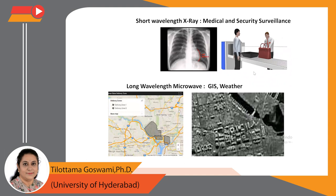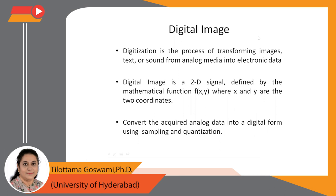The data acquired can be interpreted and analyzed in a computer for digital image data representation. Digitization is the process of transforming images, text, or sound from analog media into electronic data. A digital image is one that has been created through digitization. It is fundamentally different from analog counterparts like prints, slides, or negatives because they reveal no meaning without the software and hardware that translate or render them as images.